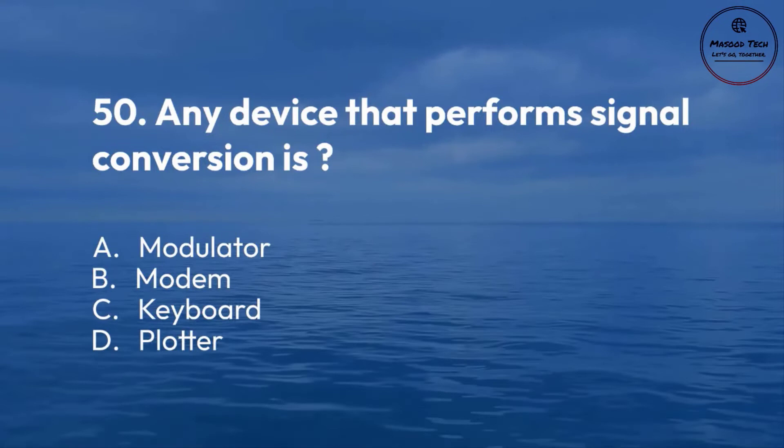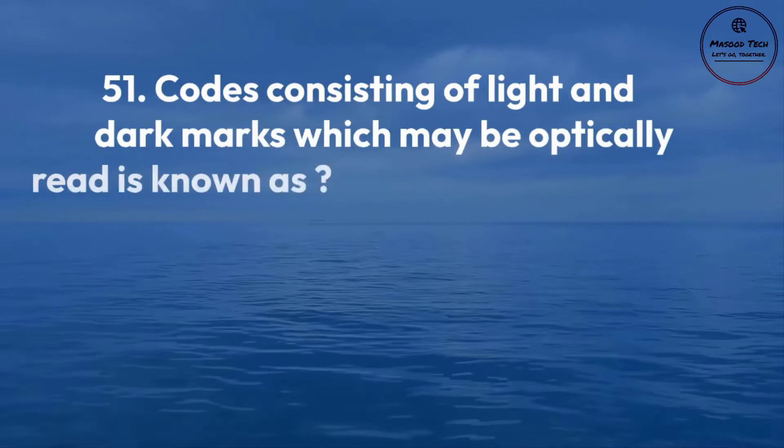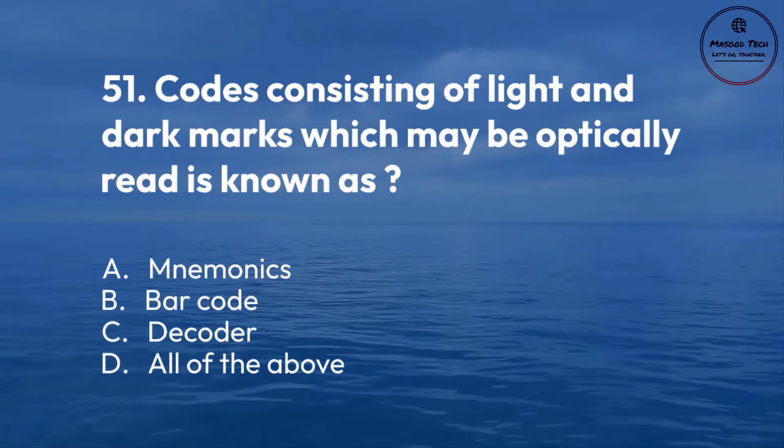Number 51. Codes consisting of light and dark marks which may be optically read is known as: A. Mnemonics. B. Barcode. C. Decoder. D. All of the above. Correct answer is B.